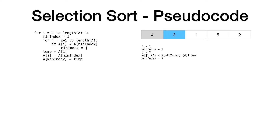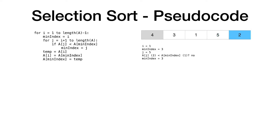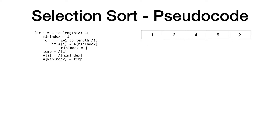Is three less than four? Yes, so we update the minindex. We then proceed in the inner loop. Is one less than three? Yes, so we update the minindex now to three. And again we proceed in the inner loop. Is five less than one? No, so we don't need to update the minindex. Is two less than one? No, so we don't need to update the minindex. The inner loop has now reached the end of the array, so we exit the inner loop and we swap the element at minindex with the leftmost unsorted element. So we swap A1 and A3.